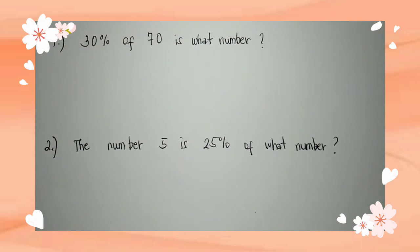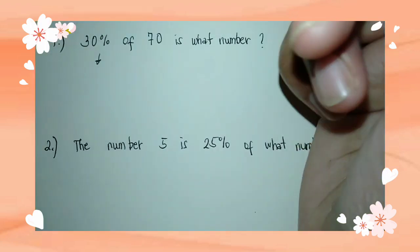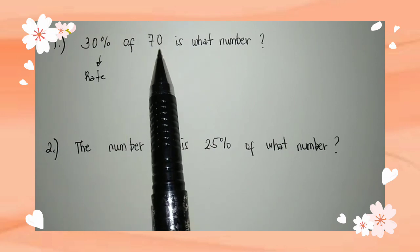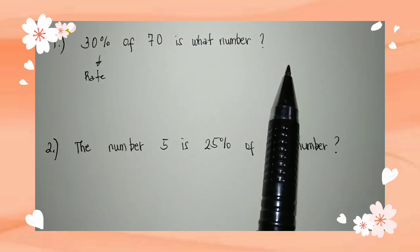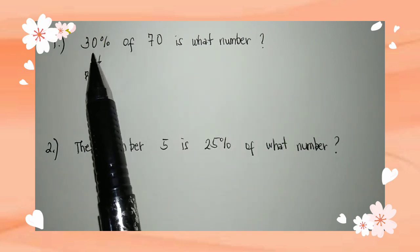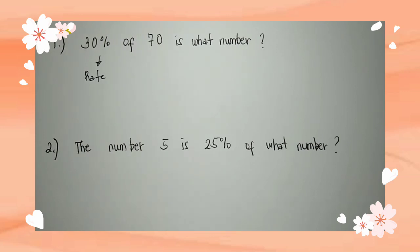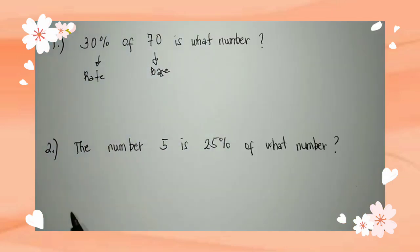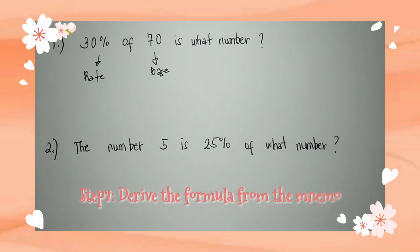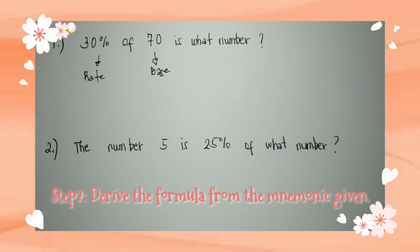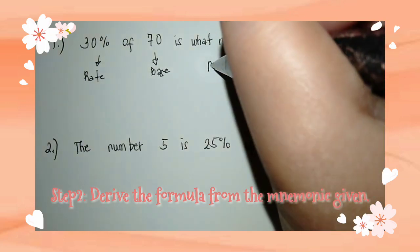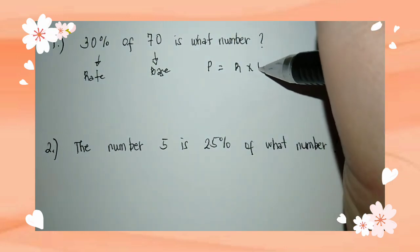When we see '30 percent,' we said earlier that a number with a percent sign is called the rate. 'Of 70 is what number' — the thing being asked is a certain number, which is the number that 30 percent represents of 70. So 70 is the base. Now that we know rate and base are given, the formula we're going to use is the percentage formula.